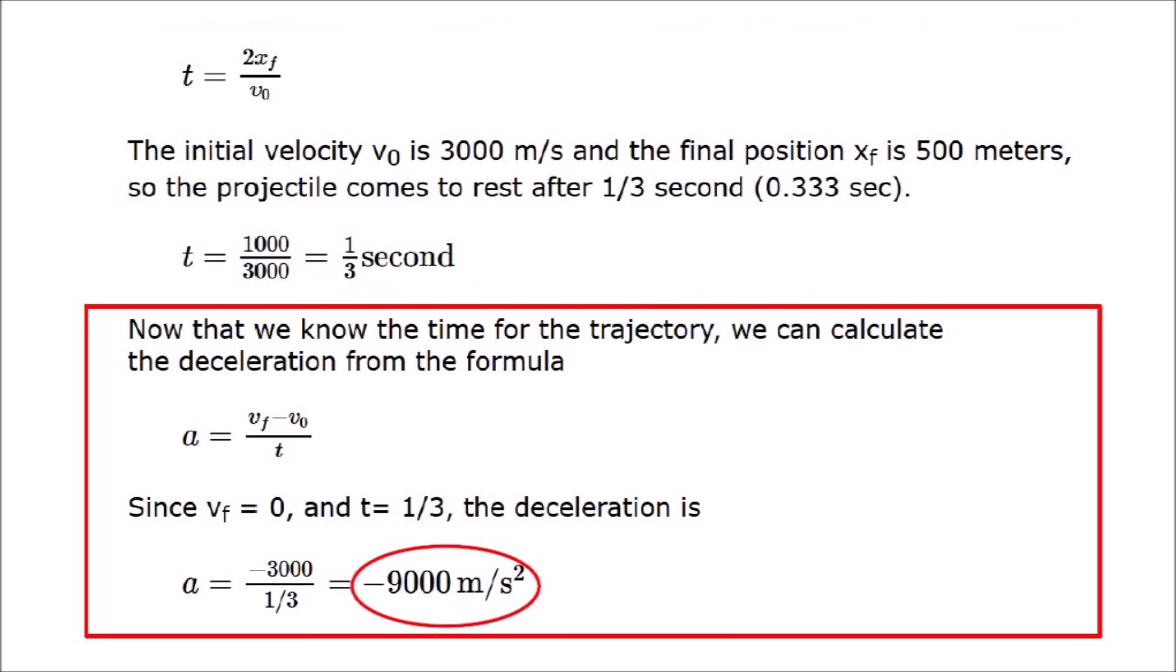Now that we know the time of the trajectory, we can calculate the acceleration using the formula that we derived from the velocity equation. Since the final velocity of the projectile is zero and the time of transit is one third of a second, the acceleration is minus 9000. The negative sign indicates that this is deceleration or stopping power.